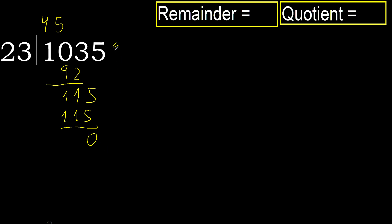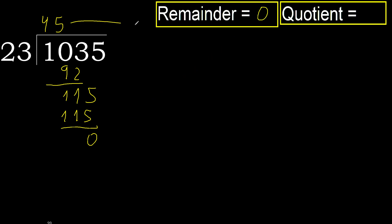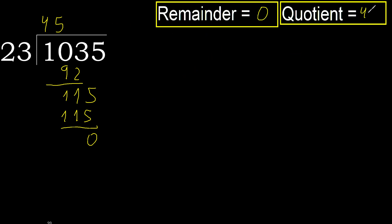Next: that is not a number, therefore finish. 1035 divided by 23 is 45. Okay.